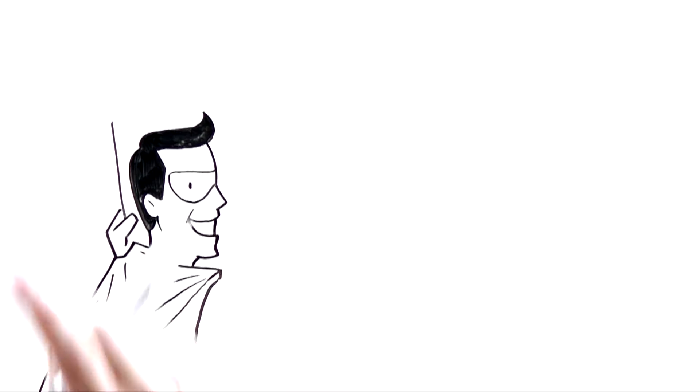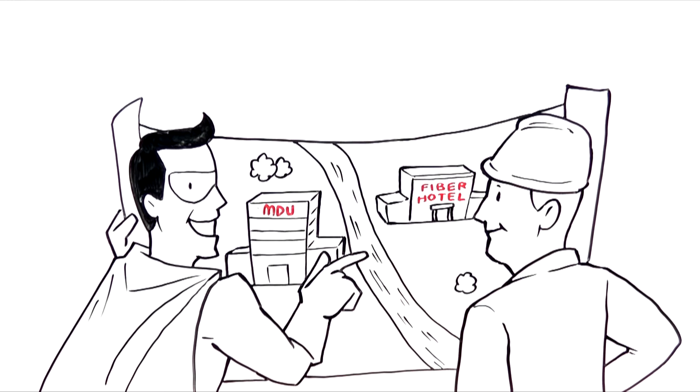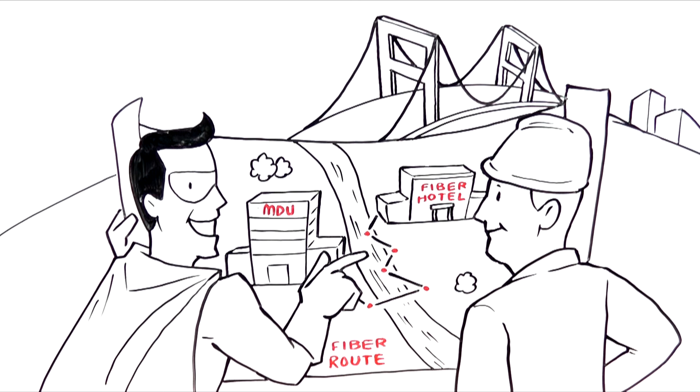Vertex will oversee engineer drawings that reflect the findings of the physical feasibility. As many site walks or route write-outs as necessary will be completed to ensure that the design is as accurate as possible and to mitigate future red lines.